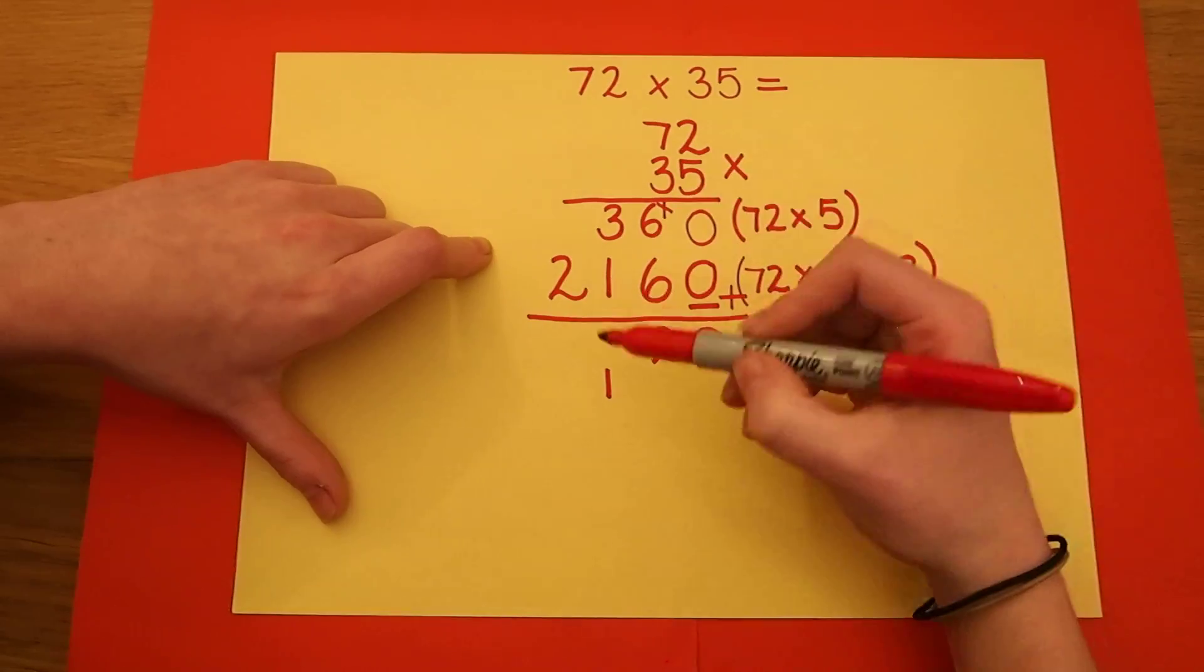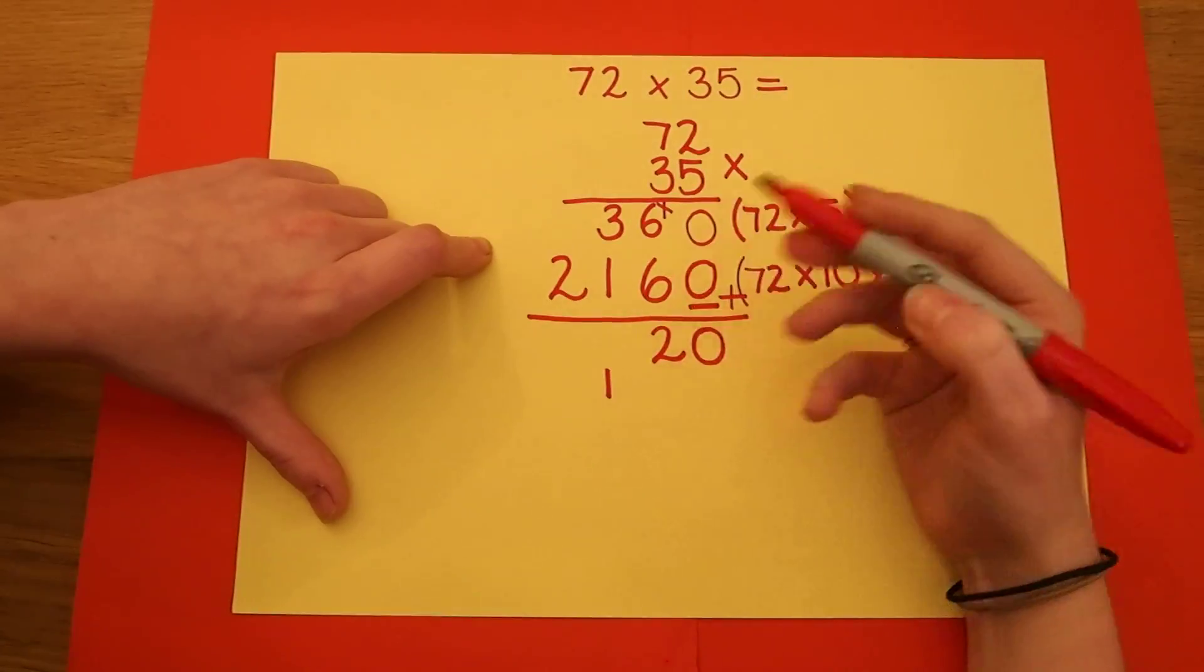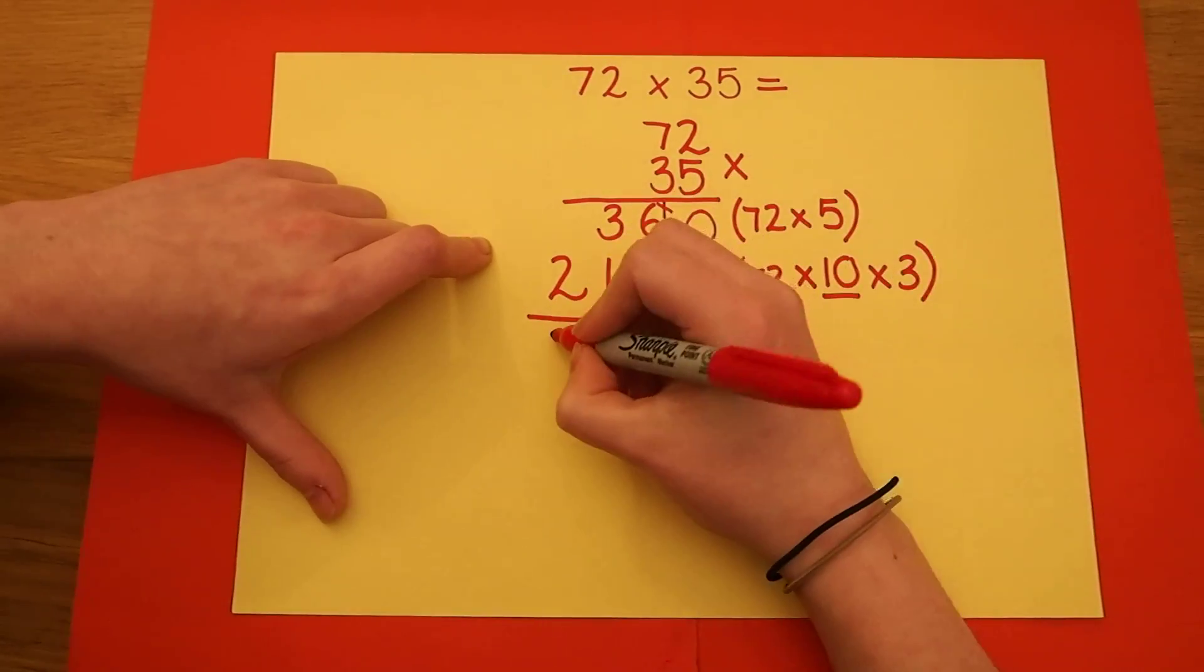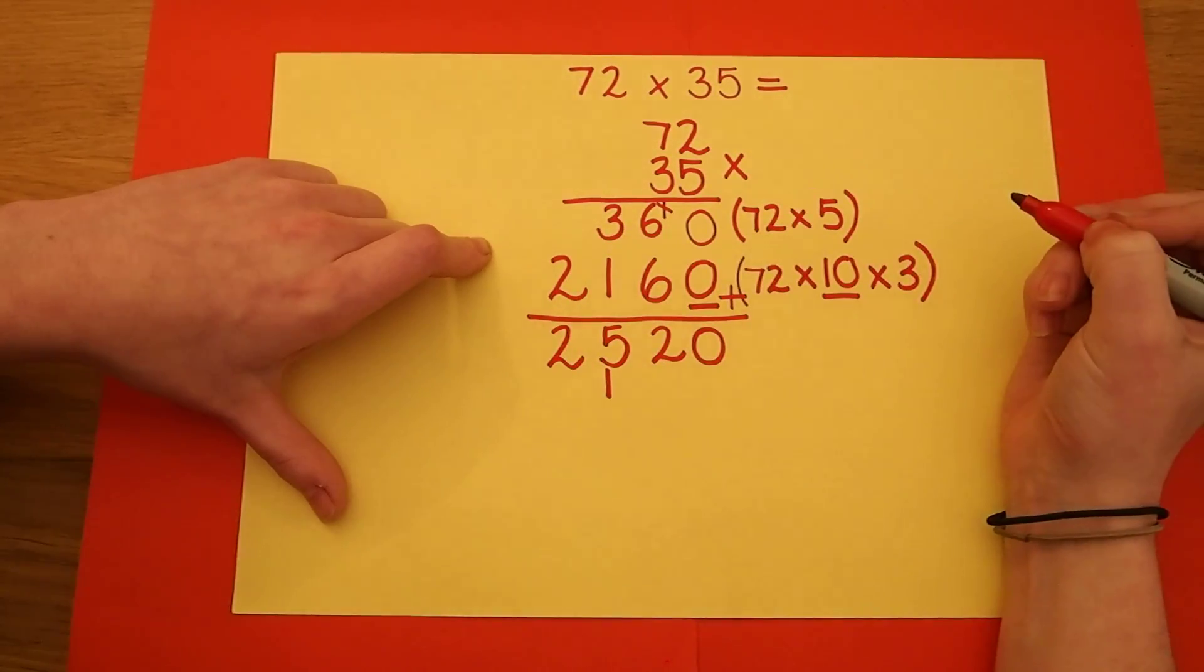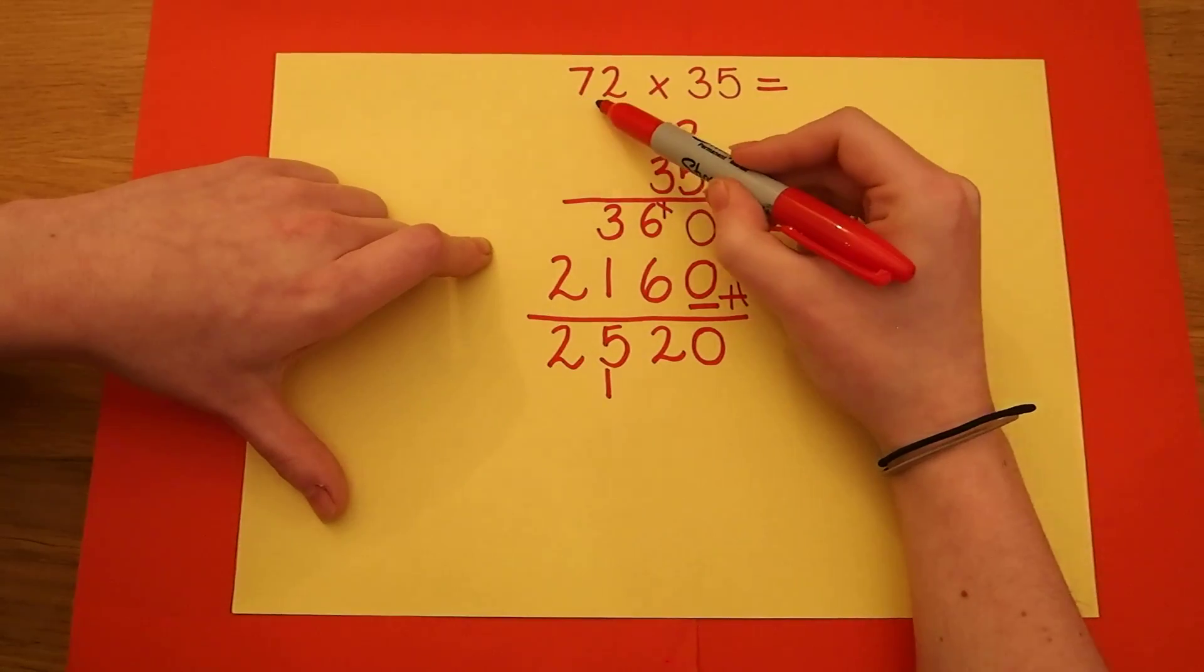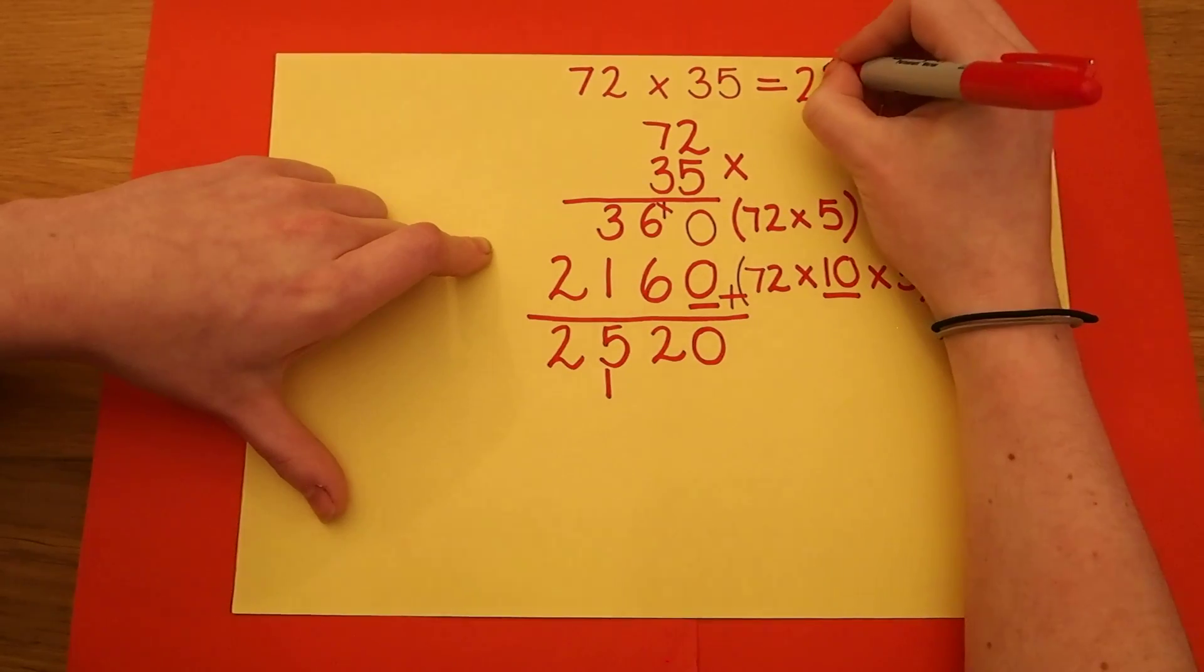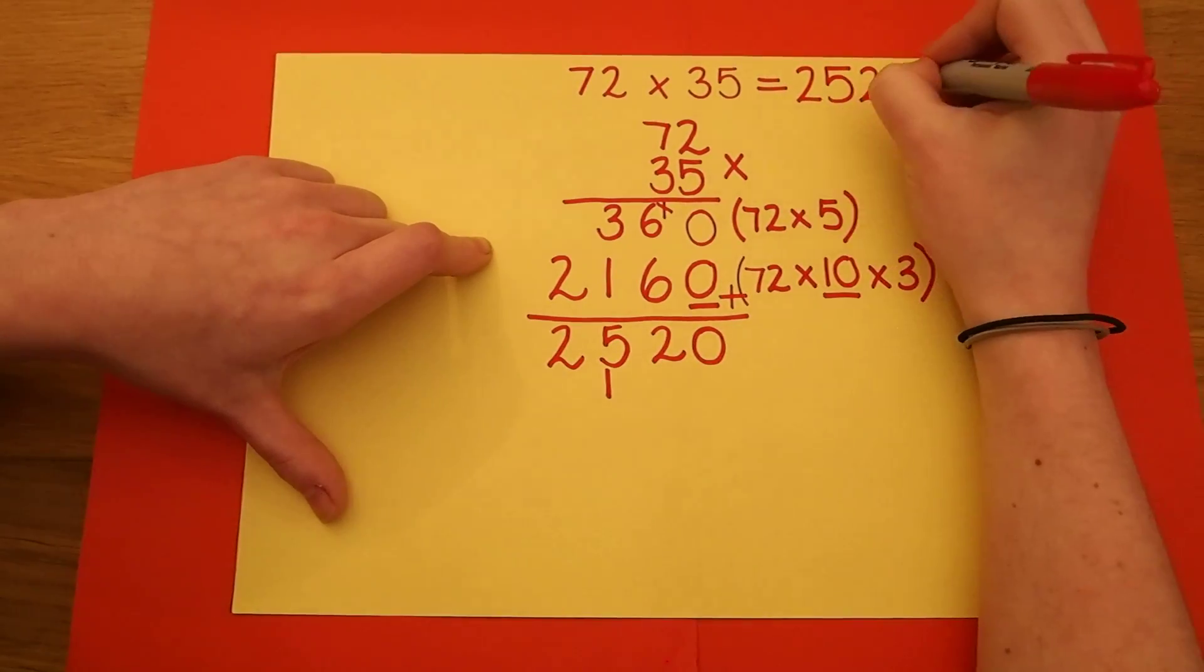3 add 1 plus the one I've just carried is 5. And 2 add nothing is 2. My answer to 72 multiplied by 35 is 2,520.